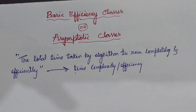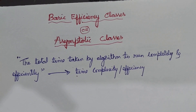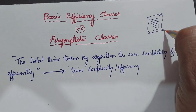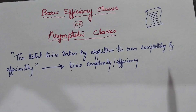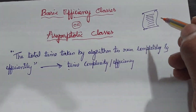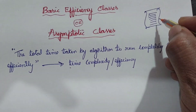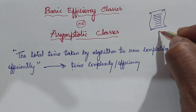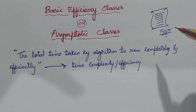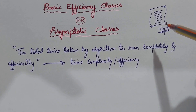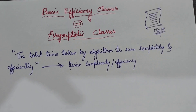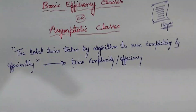In the previous video we learnt what time complexity, also called time efficiency, means. When we write a program, the total amount of time taken by that program to run completely and efficiently is called time complexity. For example, assume we have a program to sort 10 numbers — it might take 15 nanoseconds, a few microseconds, or for a large application, even seconds.